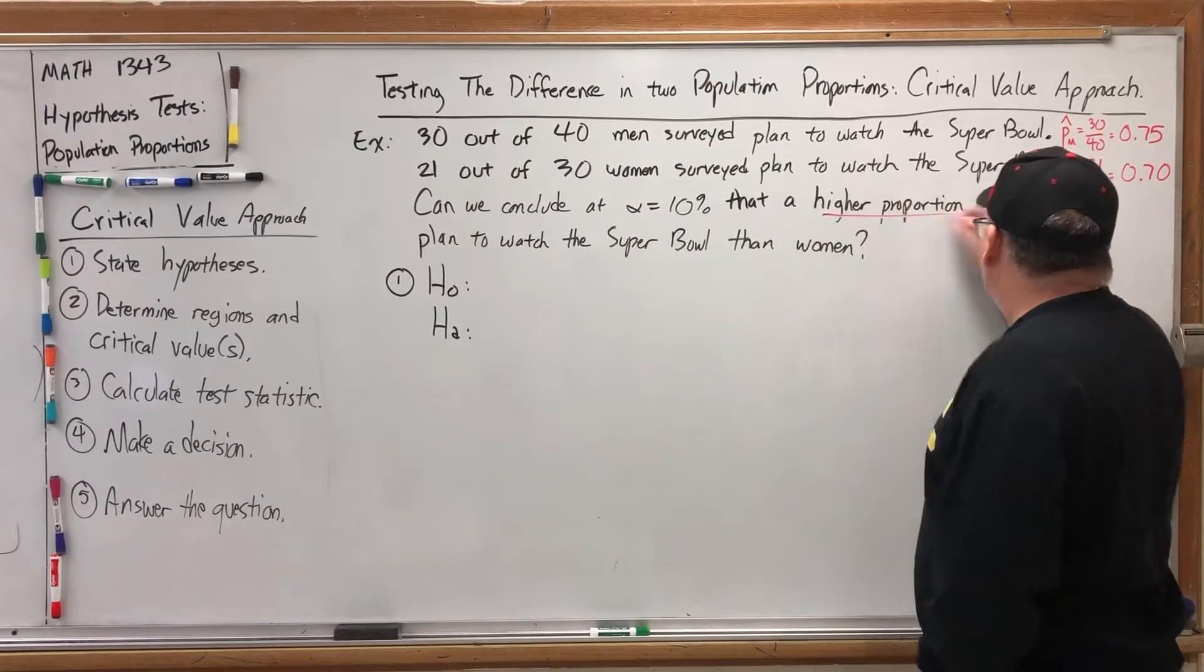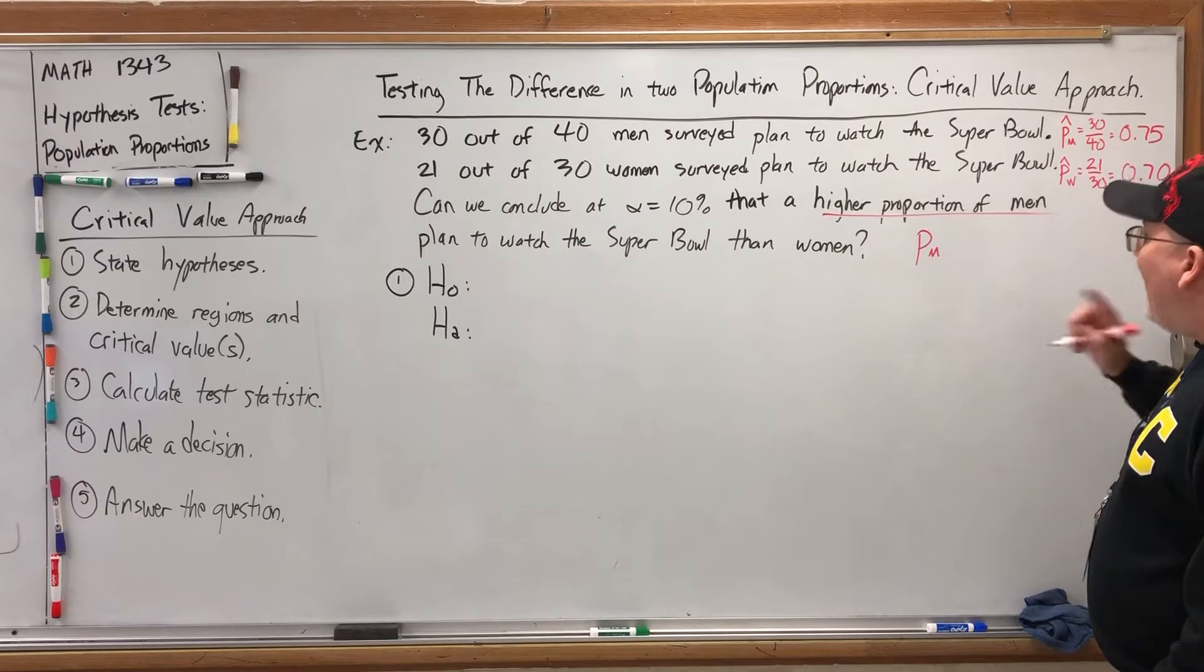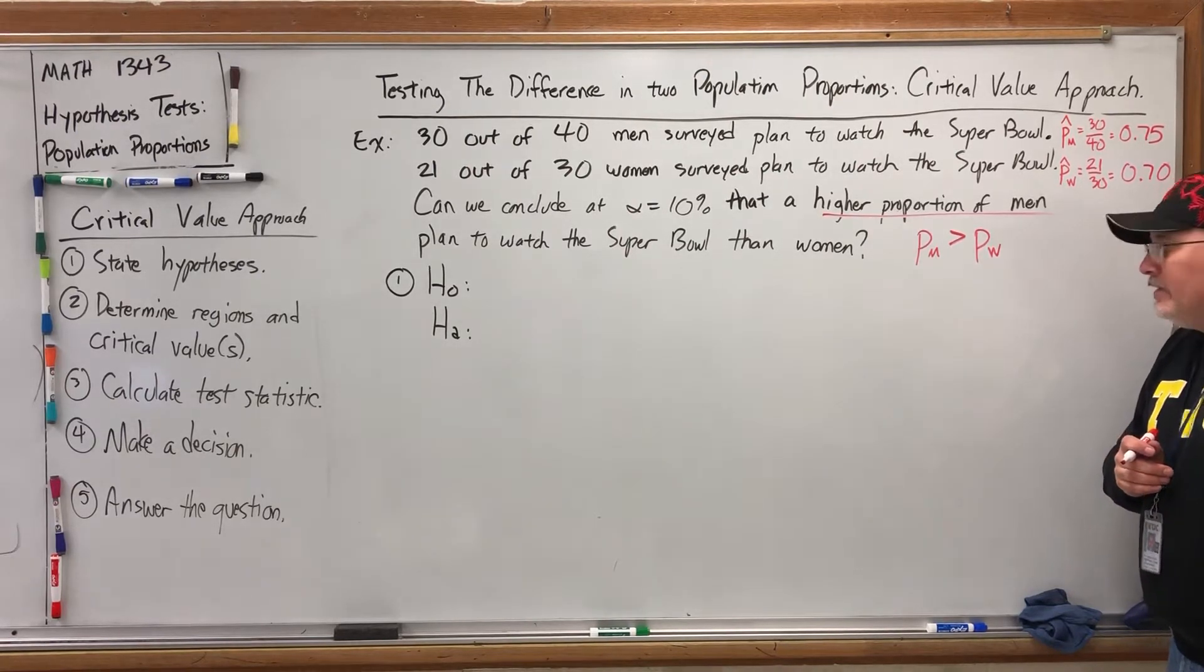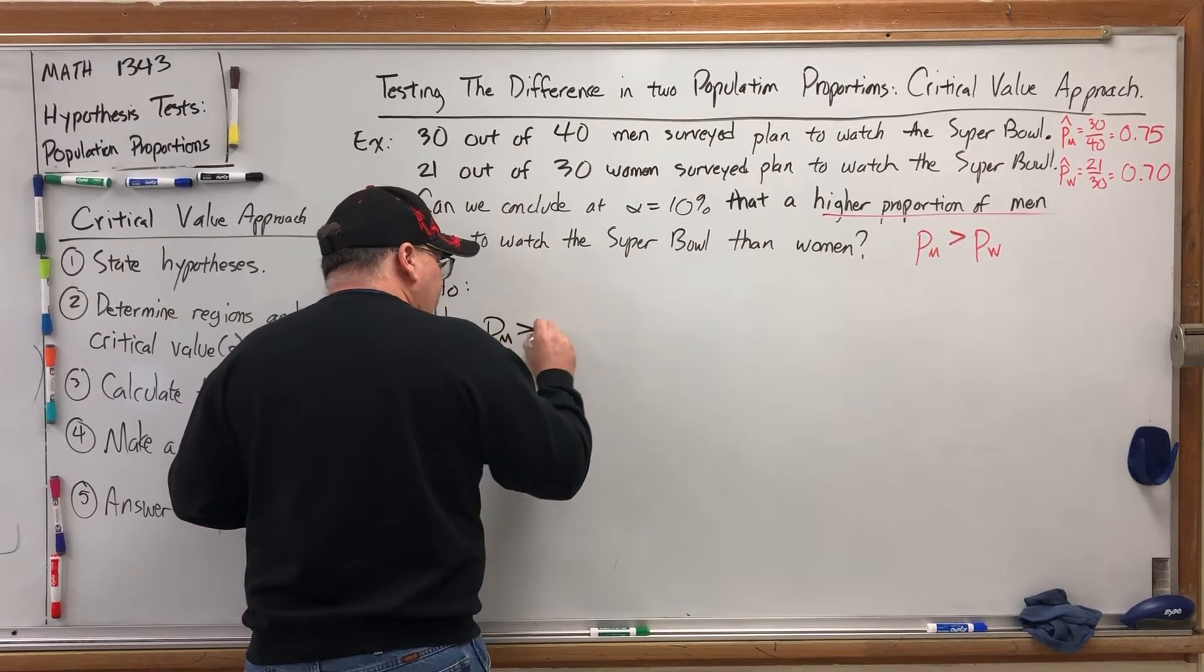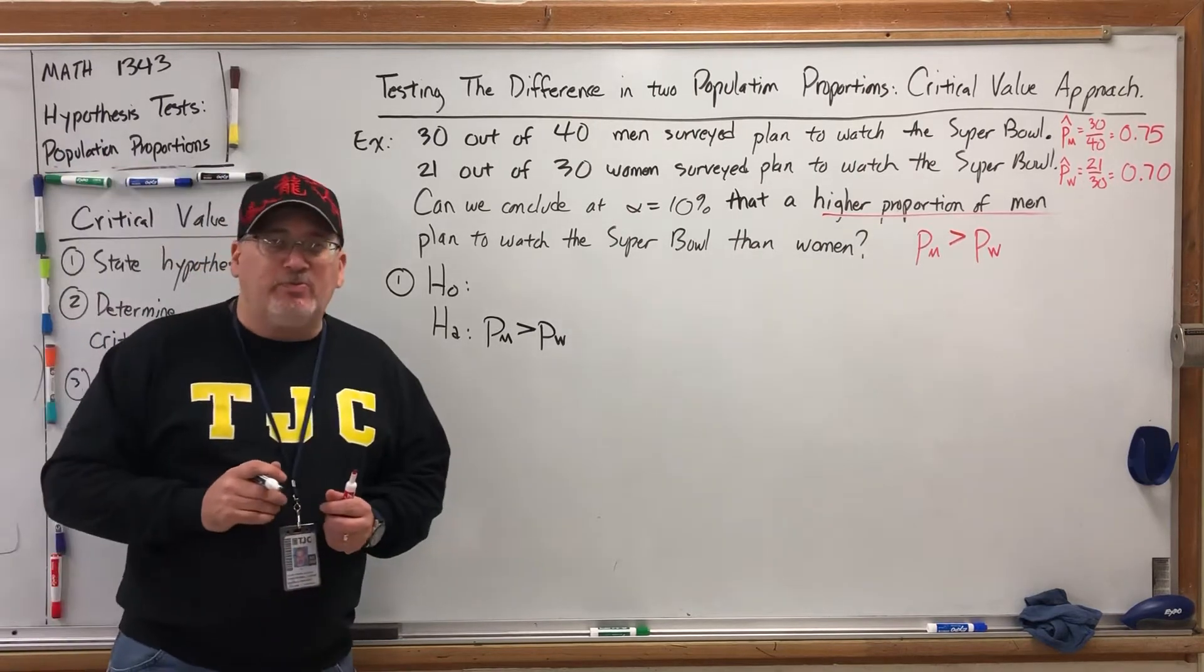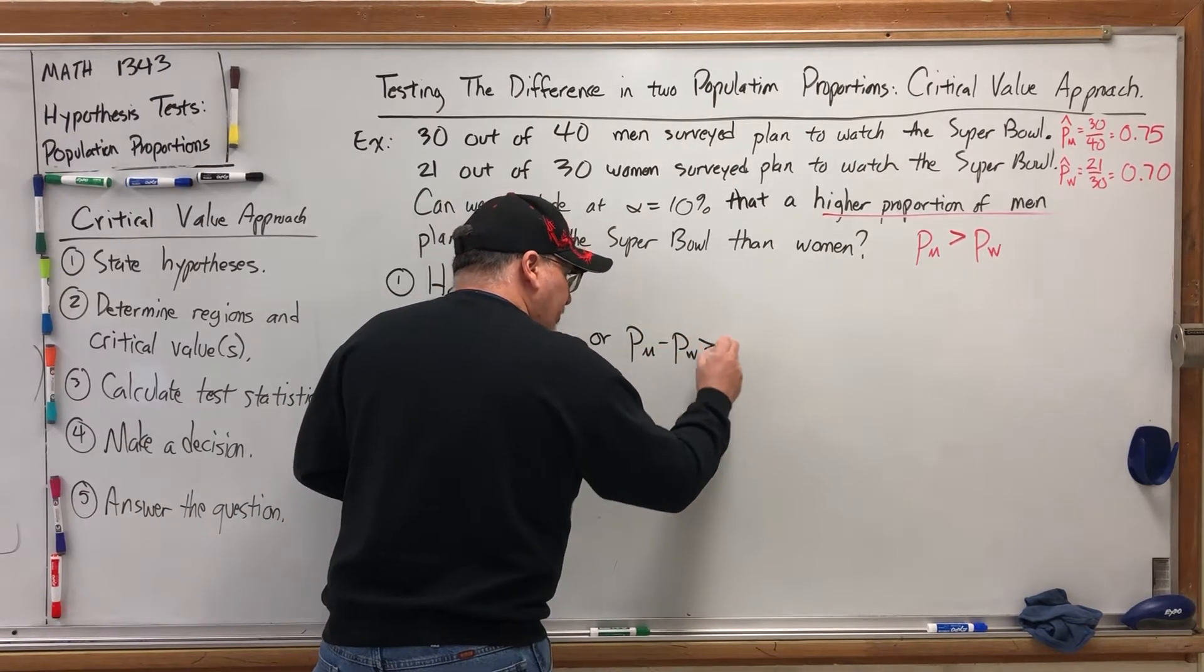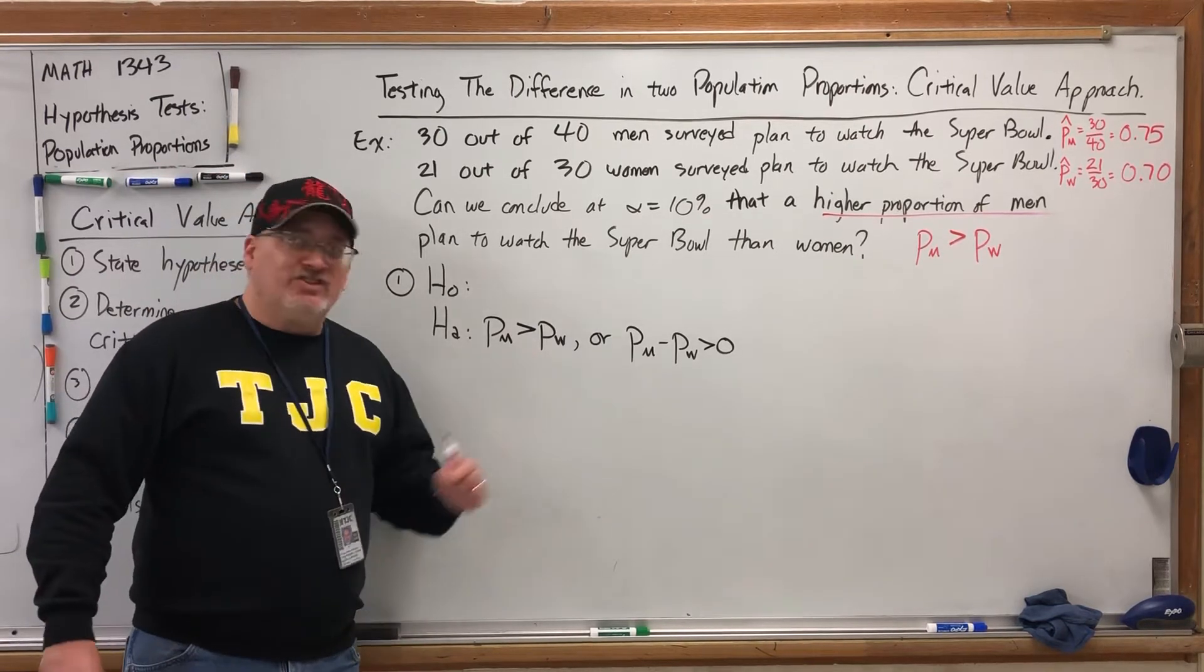Can we conclude at 10% that a higher proportion of men, so that would be p-m. Remember, we're trying to make a claim about a population, hence this has no hat. A higher proportion of men, so that would be greater than the proportion of women. Would this be the null or the alternative? Well, seeing as it does not permit equality, it has to be the alternative. Our alternative hypothesis will be the proportion of men is greater than the proportion of women. And by the way, I know this is tied to the difference in two population proportions, which implies a subtraction problem, and I wrote no subtraction problem here. However, if we subtracted the proportion of women from both sides, we would get the proportion of men minus the proportion of women is greater than zero. So we actually are testing the difference in these two population proportions, although it's not critical to rewrite this inequality in terms of a subtraction problem.